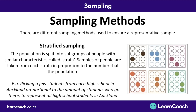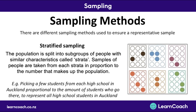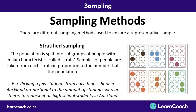Stratified sampling is where the population is split into subgroups of people with similar characteristics called strata, and samples are taken from each stratum in proportion to the number that make up the population. Going back to our high school students example, each school is a subgroup or stratum — students share similar characteristics like attending the same school and being exposed to the same teaching. Instead of picking whole schools like cluster sampling, you pick people from every school in proportion to how many people go to that school.